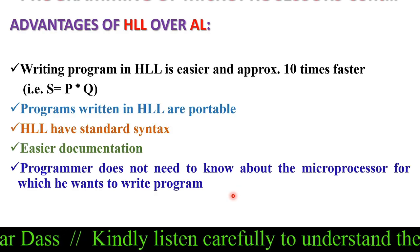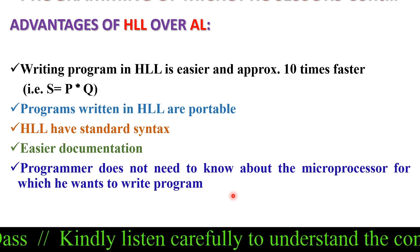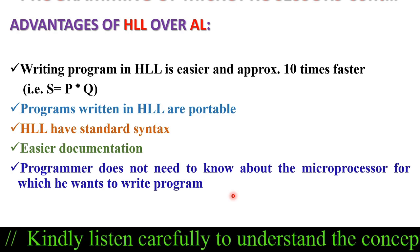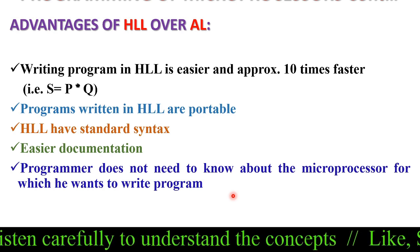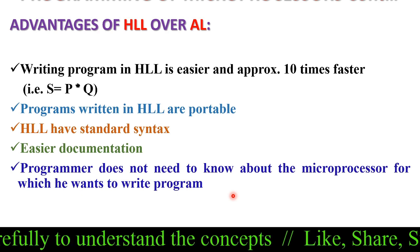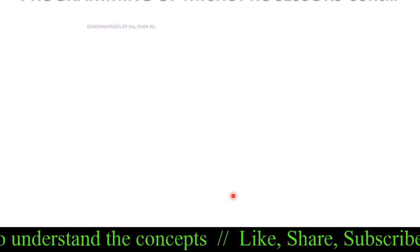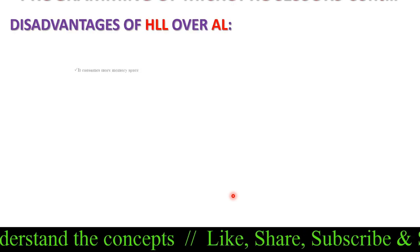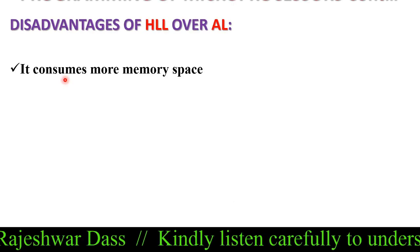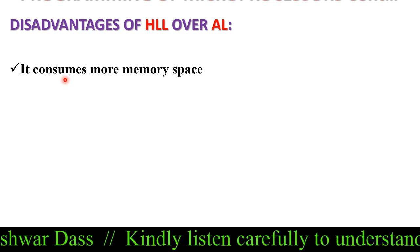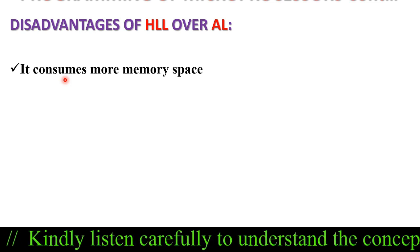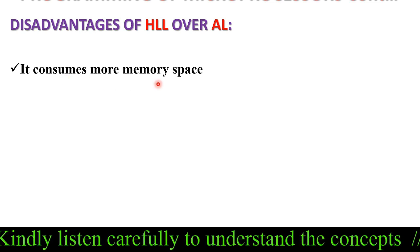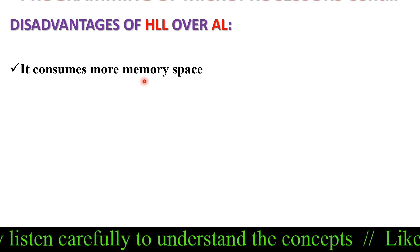High level language has standard syntax and easier documentation. Programmers do not need to know about the microprocessor for which they want to write the program. However, high level language also has some disadvantages: it consumes more memory space, because one statement is equivalent to many mnemonics.